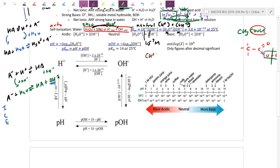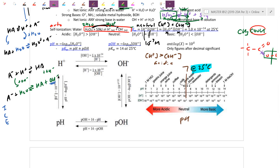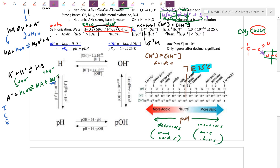If H+ ends up being many orders of magnitude higher than 10^-7, we refer to the solution as acidic. The pH scale is just a ruler — 7 is the dividing line at 25°C. If neutral water has a pH of 8 or 10, it's probably not at 25°C, since Kw changes with temperature. When pH decreases, that implies more acidic; when pH increases, we get more basic.